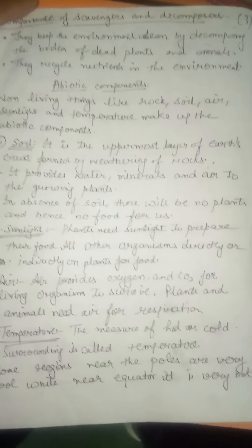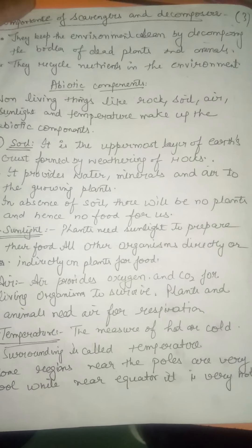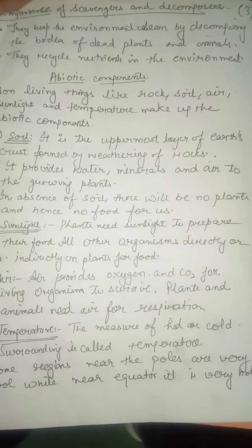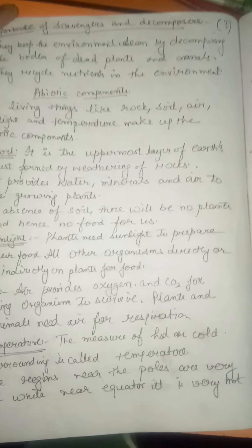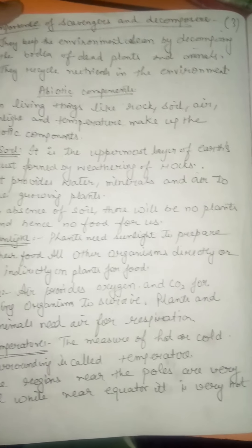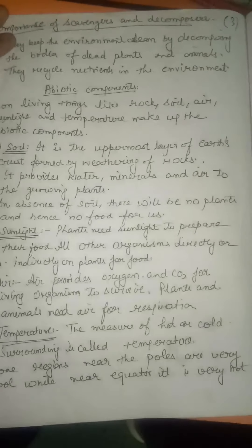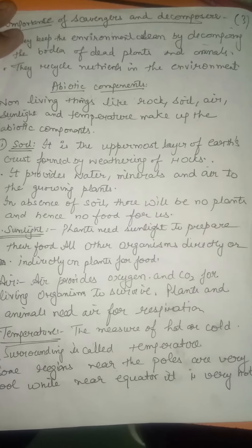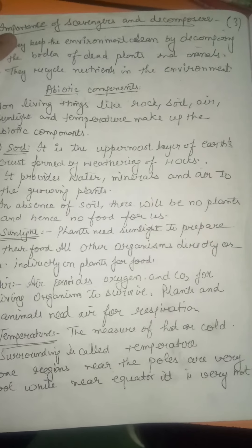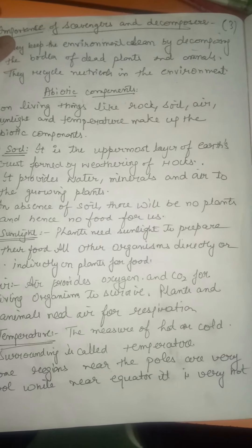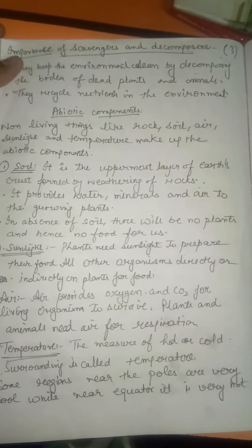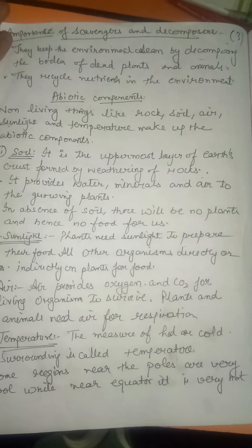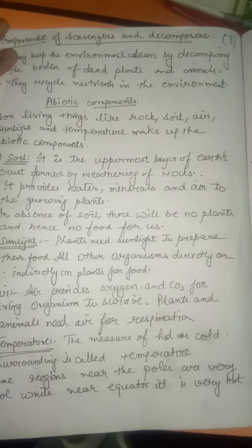The next abiotic component is air. Air is composed of different gases in different amounts. Air provides both carbon dioxide and oxygen to all living organisms. Oxygen is used by human beings and animals for carrying out the process of respiration and breathing.